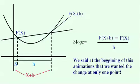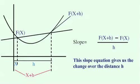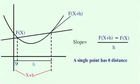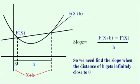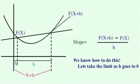But wait — we said at the beginning that we wanted the change at one and only one point. This slope equation gives us a change over the distance of h. A single point has zero distance, so we need to find the slope when h gets infinitely close to zero. We know how to do this: let's take the limit as h goes to zero.